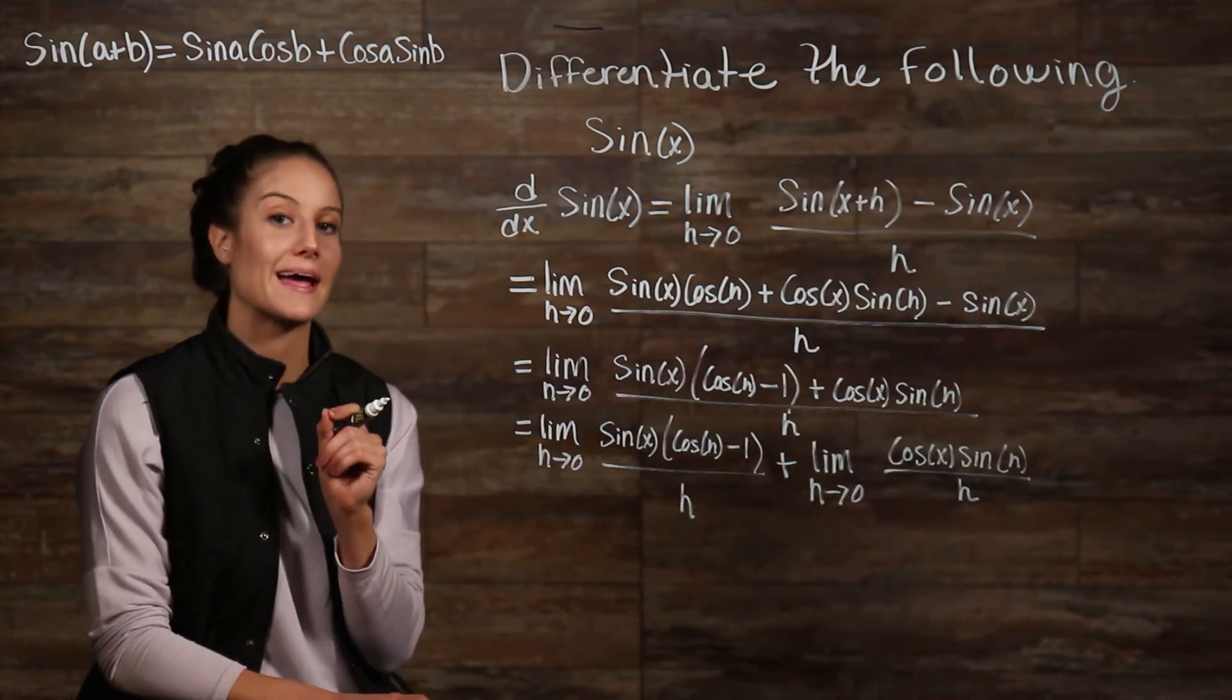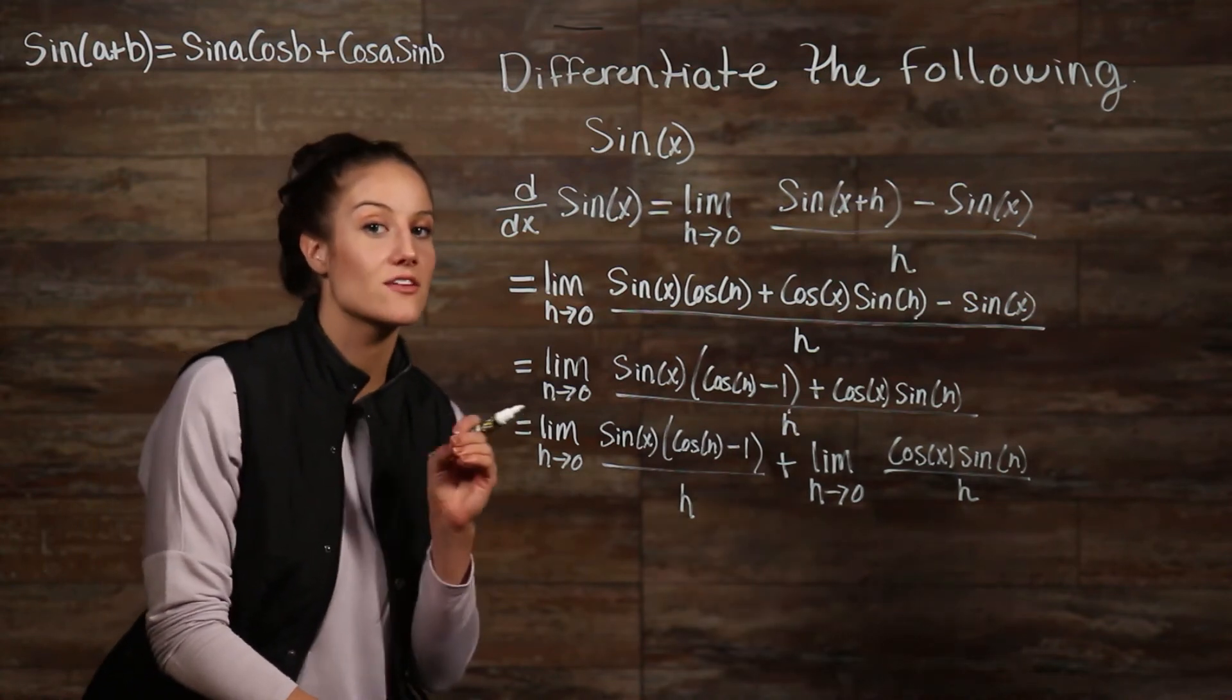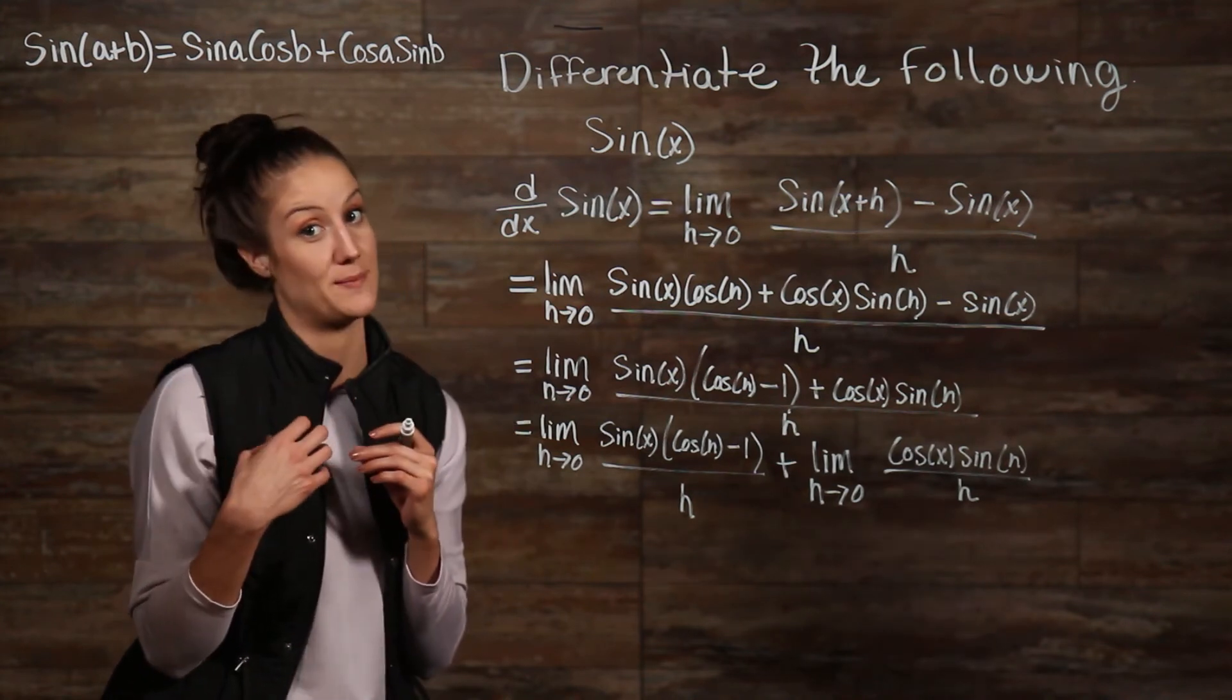But since they are being multiplied, they are constants. Which means that we can move them to the other side of our limit, which will allow us to evaluate everything to the right of our limit.